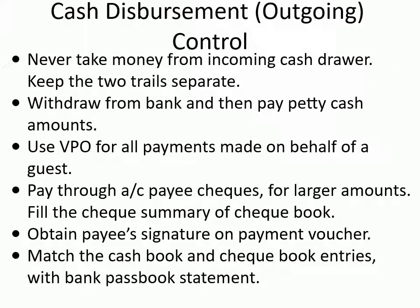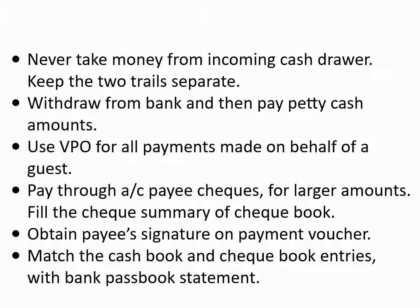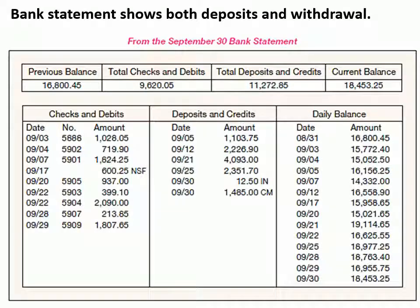Cash disbursement (outgoing) control: Never take money from the incoming cash drawer — keep the two trails separate. Withdraw from the bank and then pay petty cash amounts. Use a VPO (Visitor Paid Out) for all payments made on behalf of a guest. Pay through account-payee checks for larger amounts. Fill the check summary of the checkbook and obtain the payee's signature on the payment voucher. Match the cash book and checkbook entries with the bank passbook statement, which shows both deposits and withdrawals.